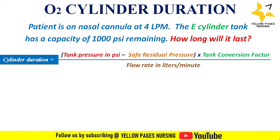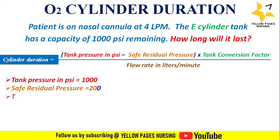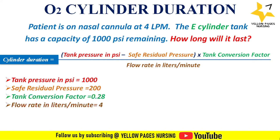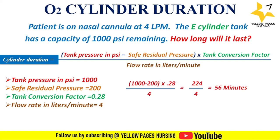Here, tank pressure in PSI is 1000, safe residual pressure is 200, and the tank conversion factor for the E-cylinder is 0.28. Flow rate in liters per minute is 4. Applying all values into the formula, we get the answer: 56 minutes. Hence, the cylinder will last for 56 minutes at a flow rate of 4 liters per minute.